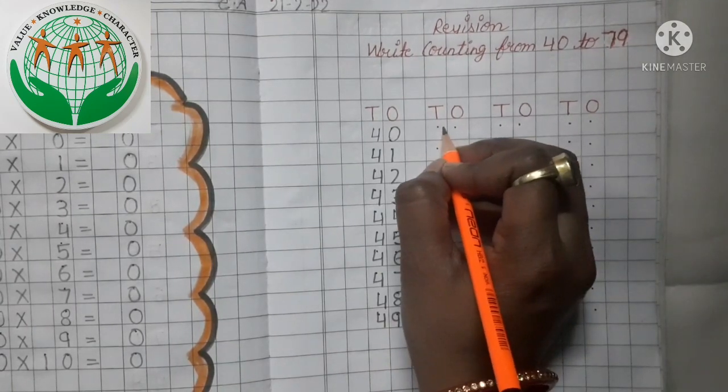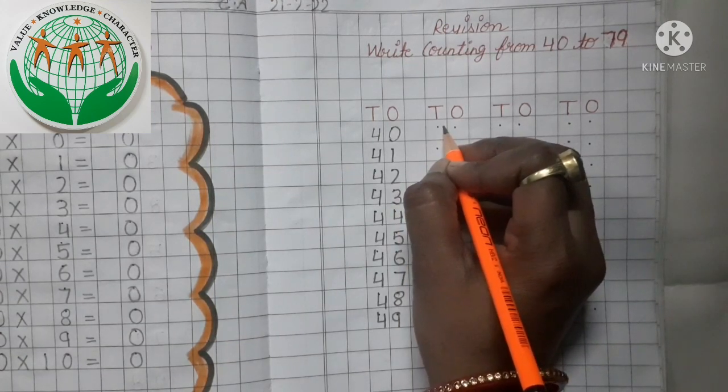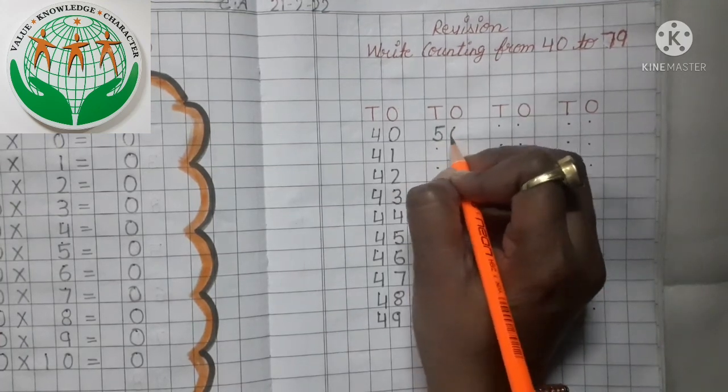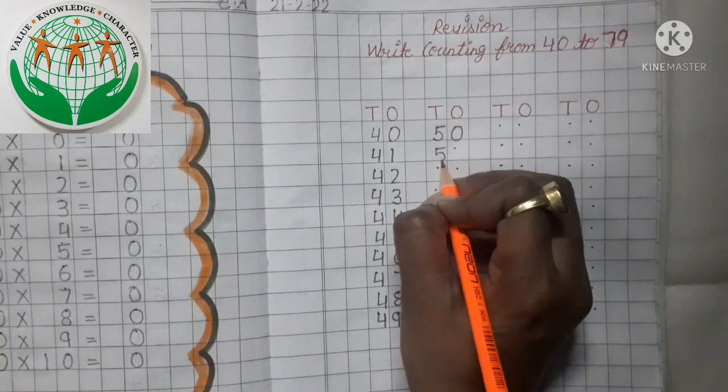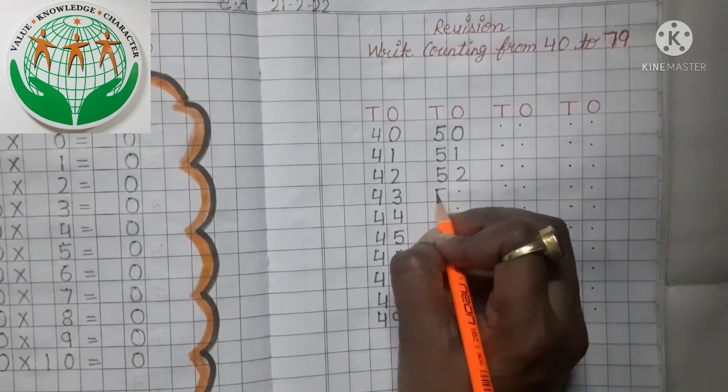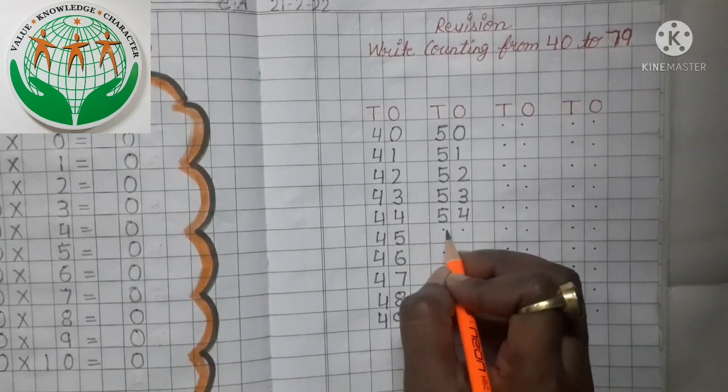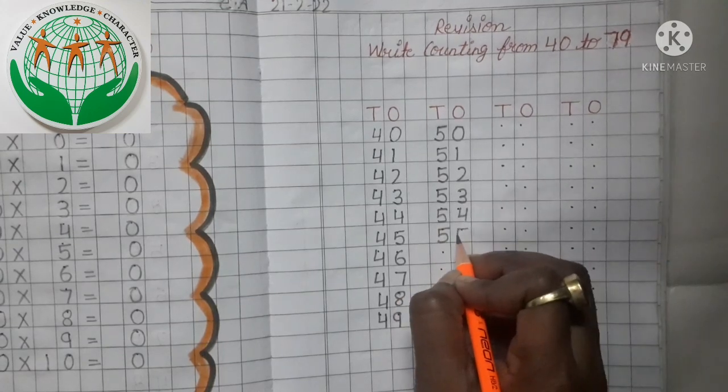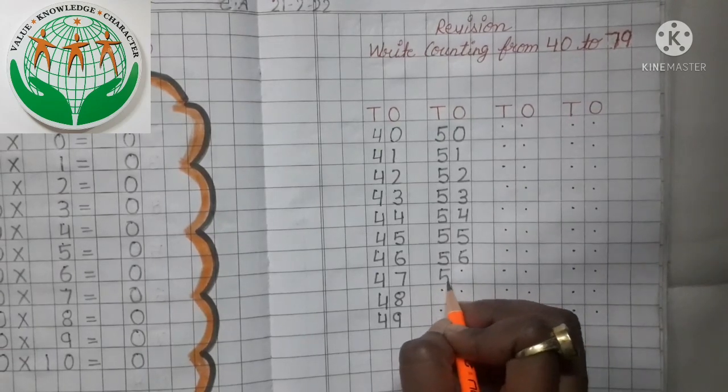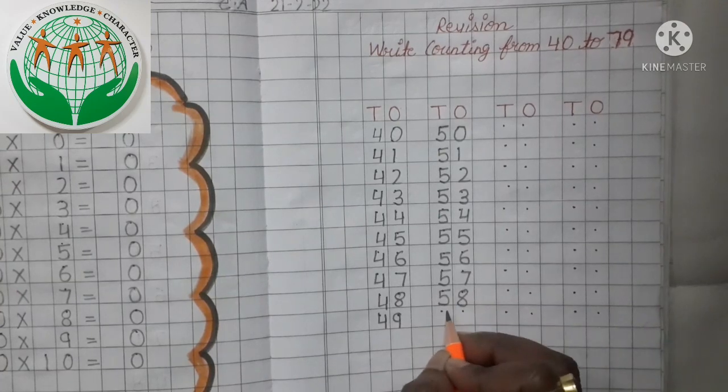Now come to the next line and what comes after 49? Yes, number 50. So we write here number 50. 50, 51, 52, 53, 54, 55, 56, 57, 58, and 59.